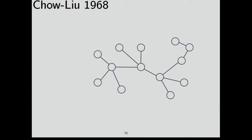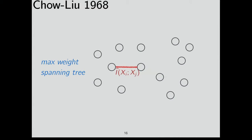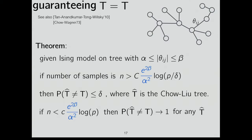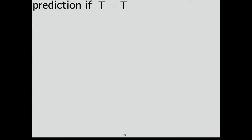Chow-Liu is a simple idea: compute the empirical mutual informations or correlations between every pair. Since you don't know the tree, you add edges one by one according to maximum weight, avoiding cycles — this is Kruskal's greedy algorithm, giving the max-weight spanning tree. The number of samples needed for the correct tree is e to the 2-beta-over-alpha-squared times log p. This is actually tight. But for predictions we also need to specify parameters: match the moments across edges, which gives the maximum likelihood distribution on that tree.